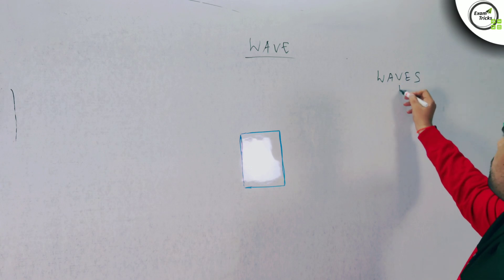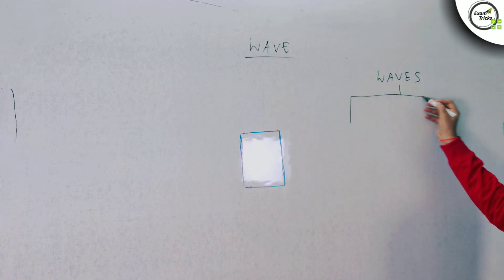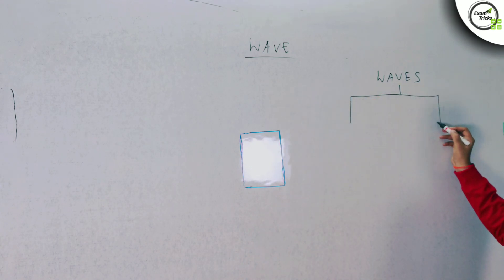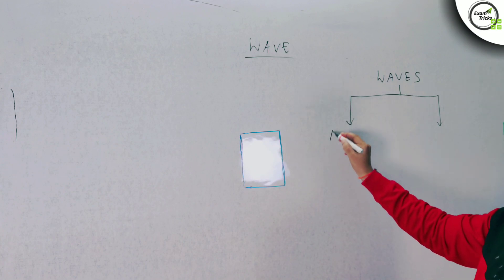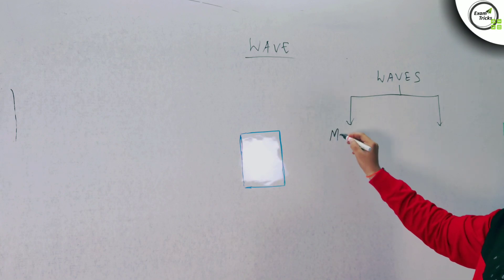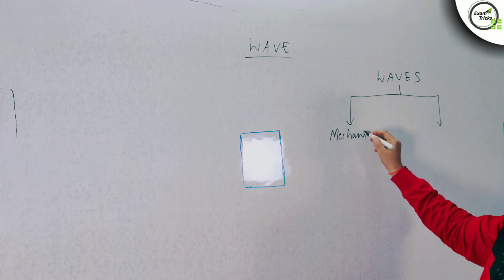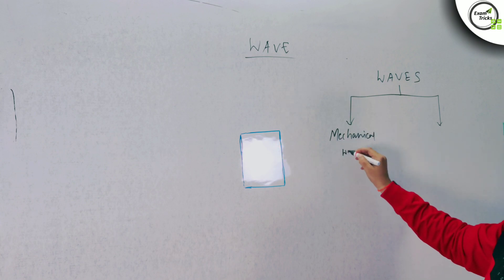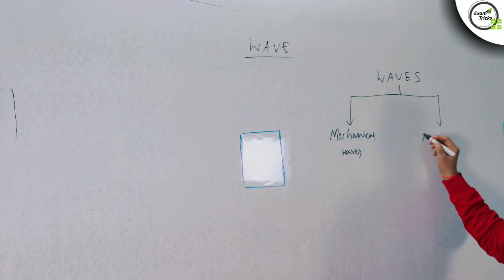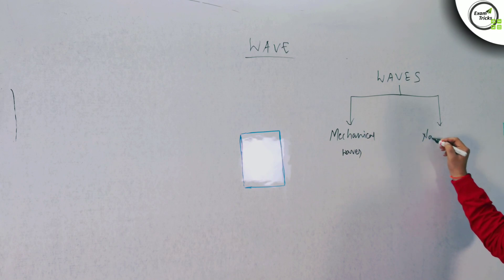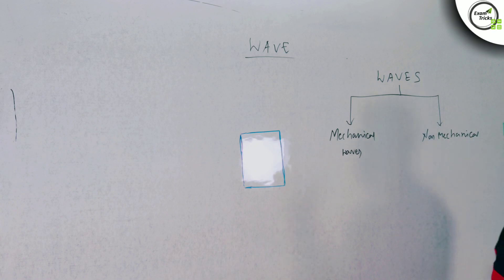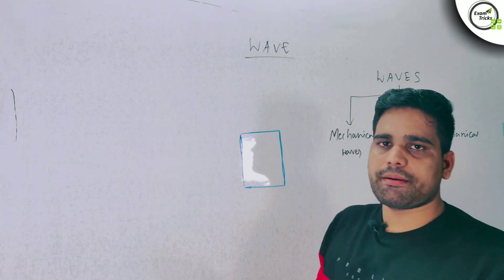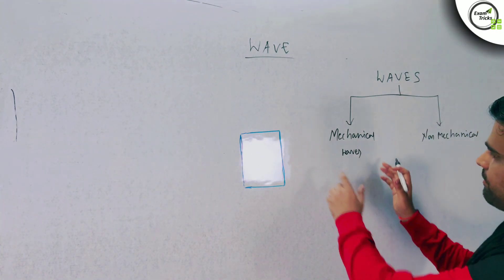In general, there are two types of waves. We will discuss the two types: mechanical waves and non-mechanical waves. So, what is mechanical and non-mechanical?